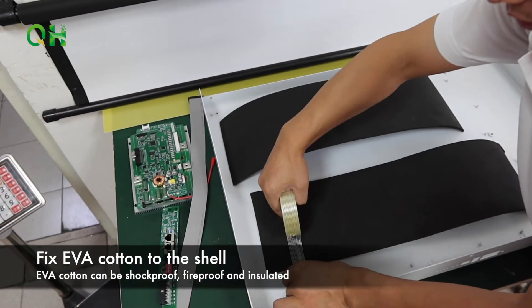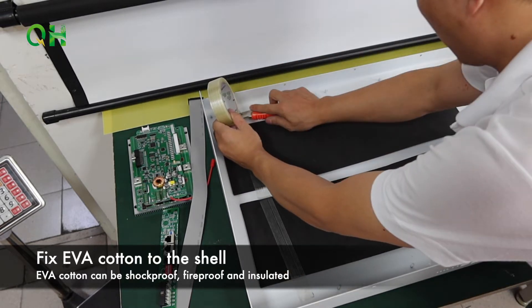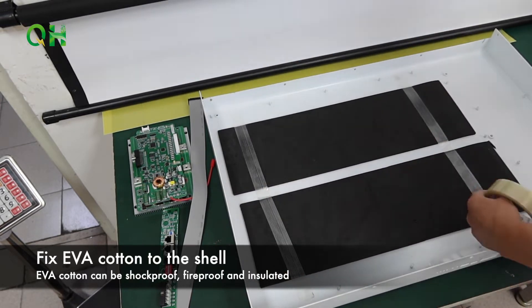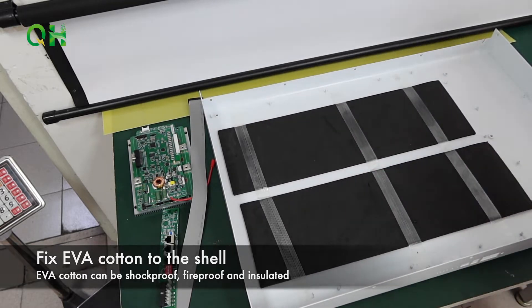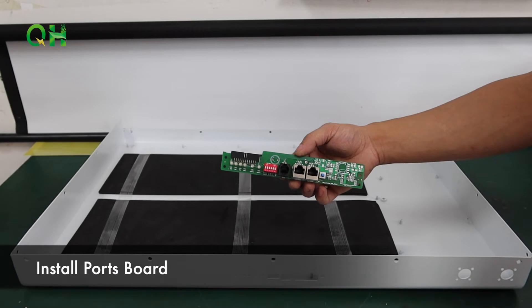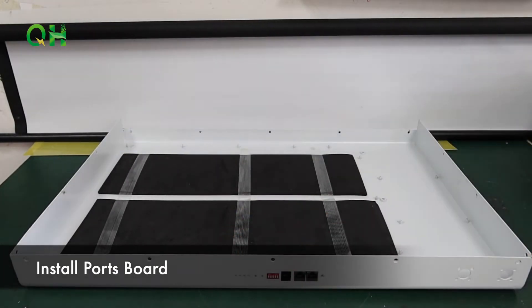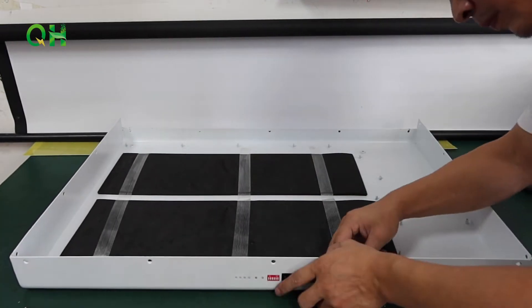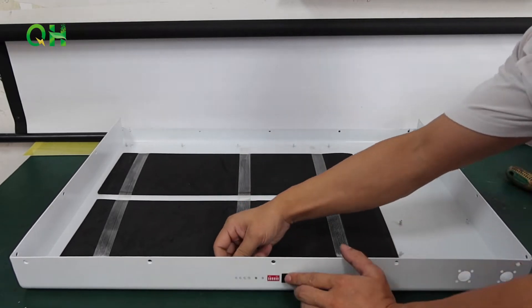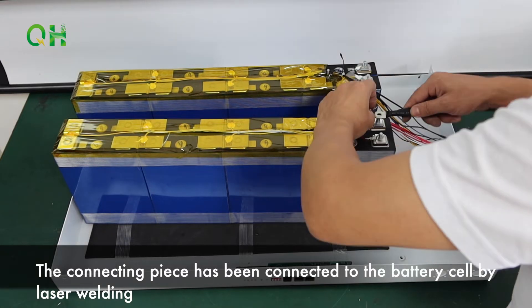Fix EVA content to the shell. Install ports board. The connecting piece has been connected to the battery cell by laser welding.